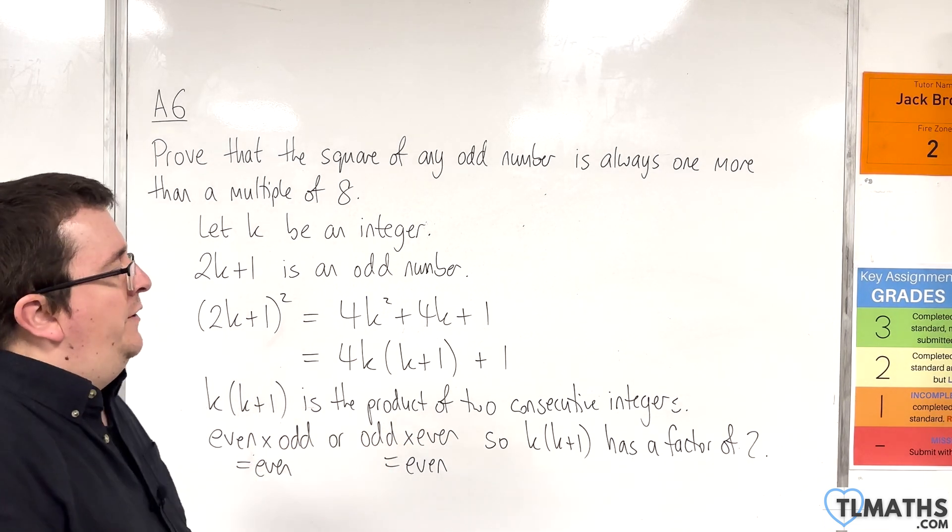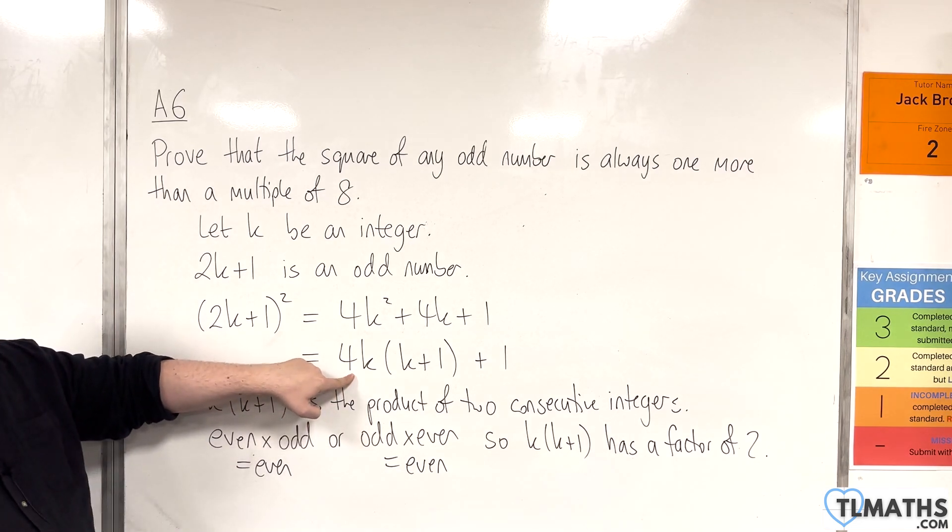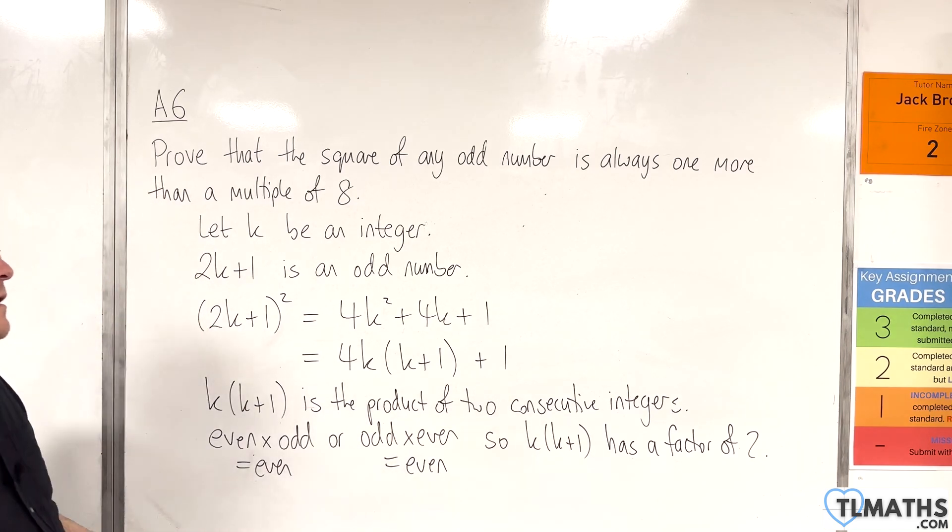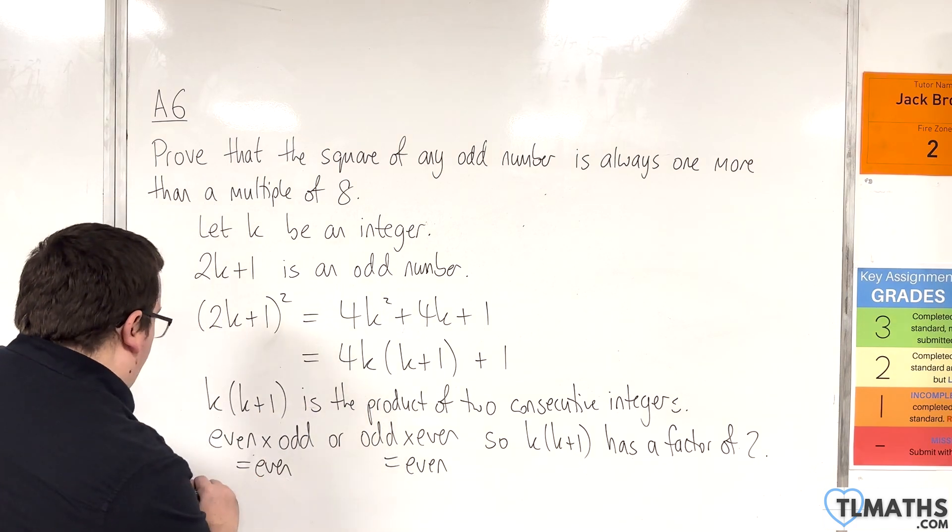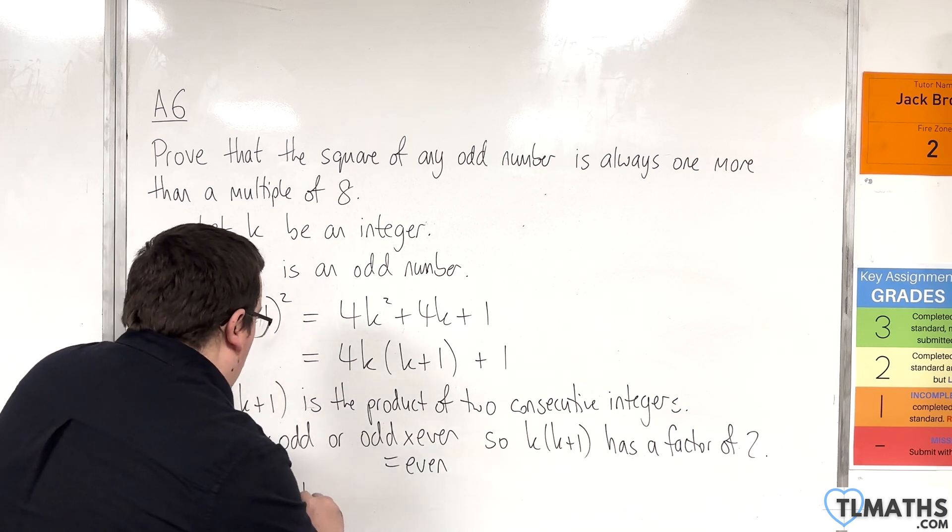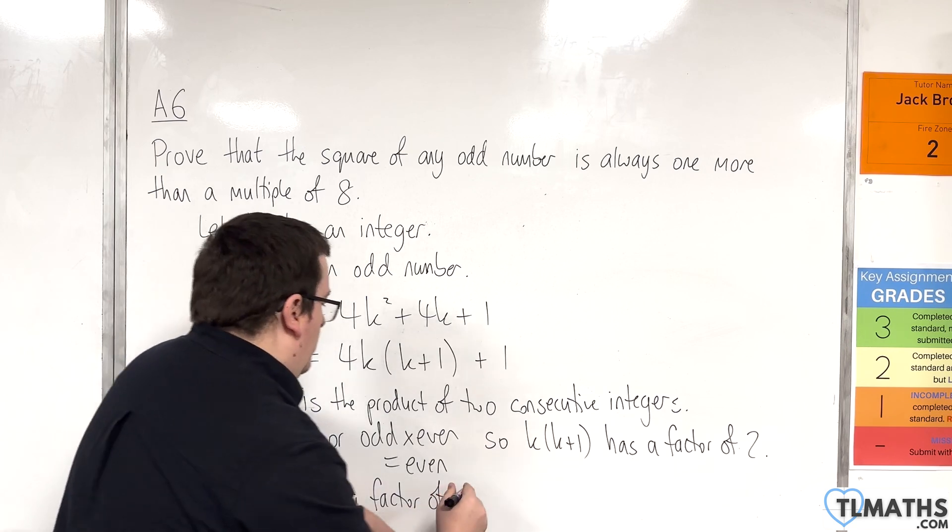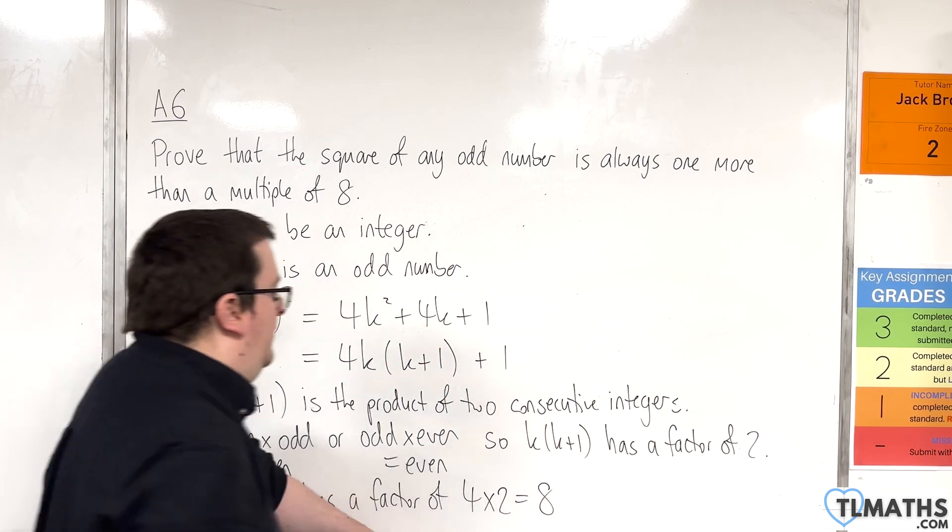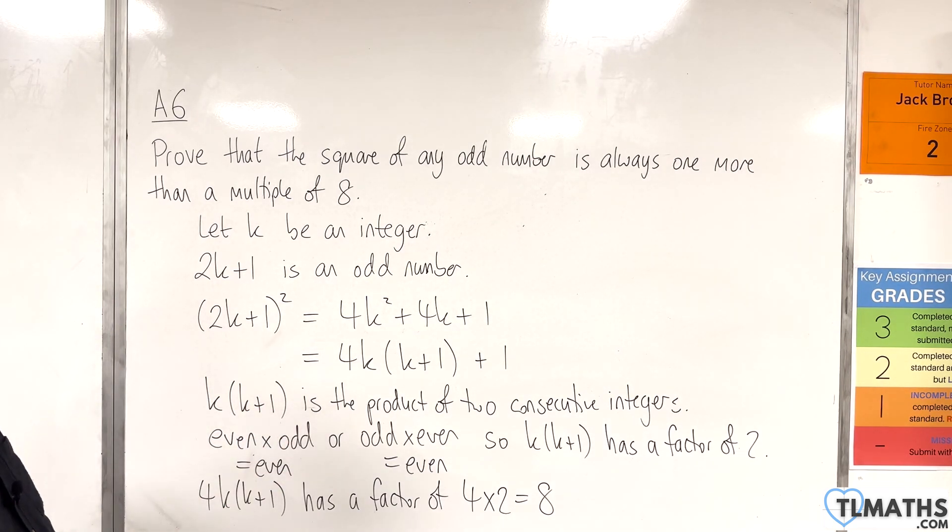Now if k(k + 1) has a factor of 2, and we are multiplying that by 4, we know that 4k(k + 1) already has a factor of 4. So 4k(k + 1) has a factor of 4 times 2, which is 8. We know that 8 has to be a factor of 4k(k + 1).